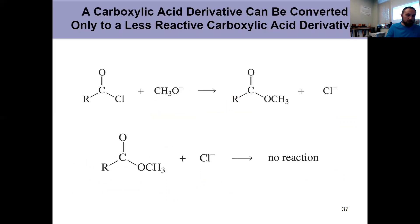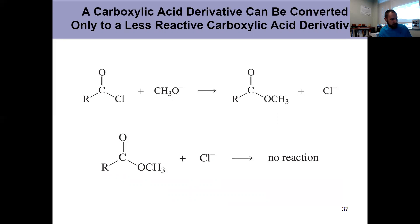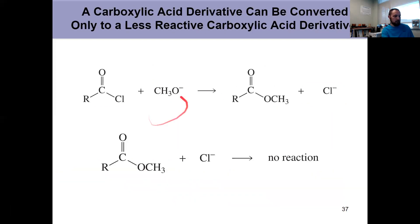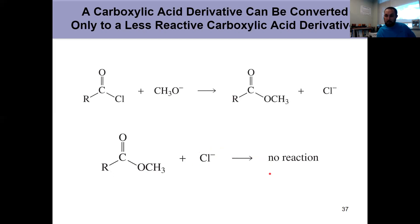A reaction only happens if a stronger base is coming in. Another way of stating this: carboxylic acid derivatives can only be converted to a less reactive carboxylic acid derivative. You can convert an acyl chloride to anything less reactive, but you can't easily convert a carboxylic acid to an acyl chloride. Taking an ester and trying to convert it to an acyl chloride — that's a weaker base/better leaving group scenario — that reaction doesn't happen. Don't fall for those reactions; you can't convert to a more reactive derivative.